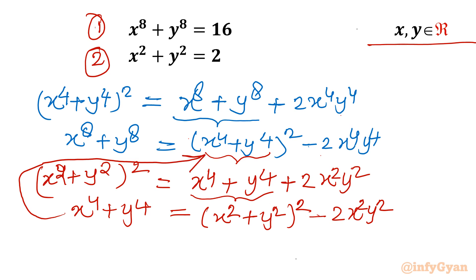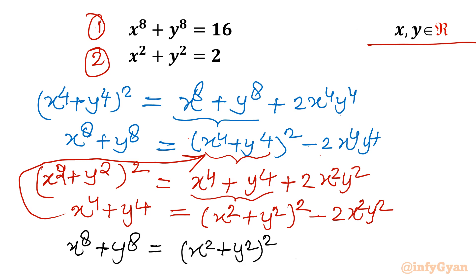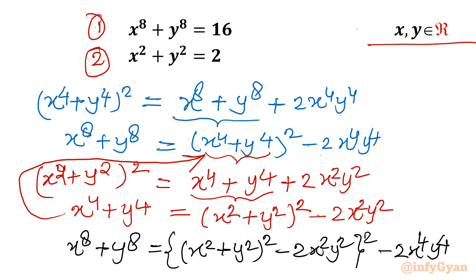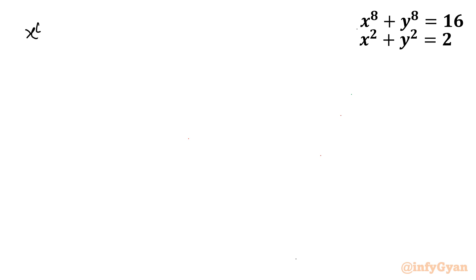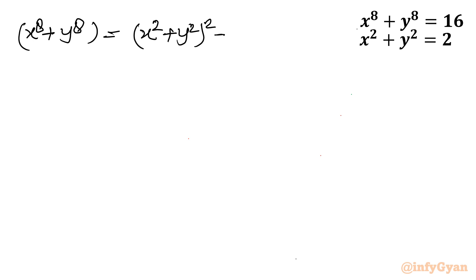Substituting identity 2 into identity 1, we get: x⁸ + y⁸ = [(x² + y²)² − 2x²y²]² − 2x⁴y⁴. Now I will put x² + y² = 2 on the RHS and 16 on the LHS.